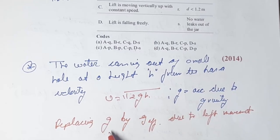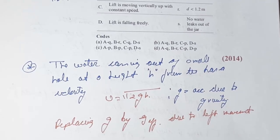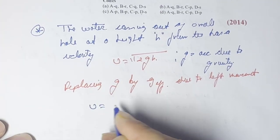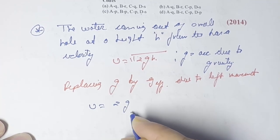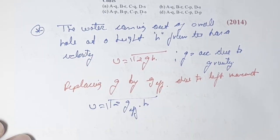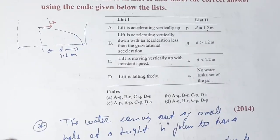In the lift, the effective acceleration accounts for the lift's acceleration being added or subtracted. So we write v equal to square root of 2 times g_effective times h. Next, we find the time taken by the water jet to strike the floor — the time of fall.